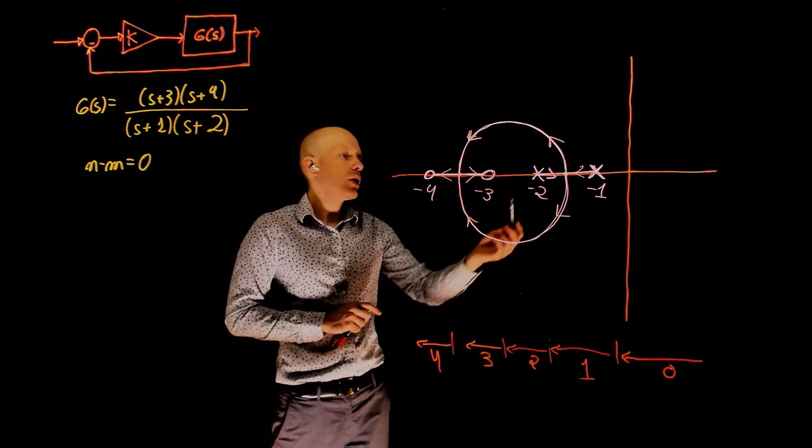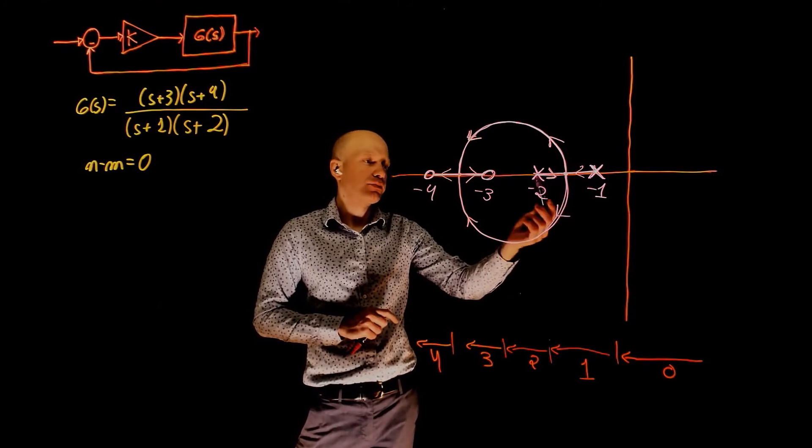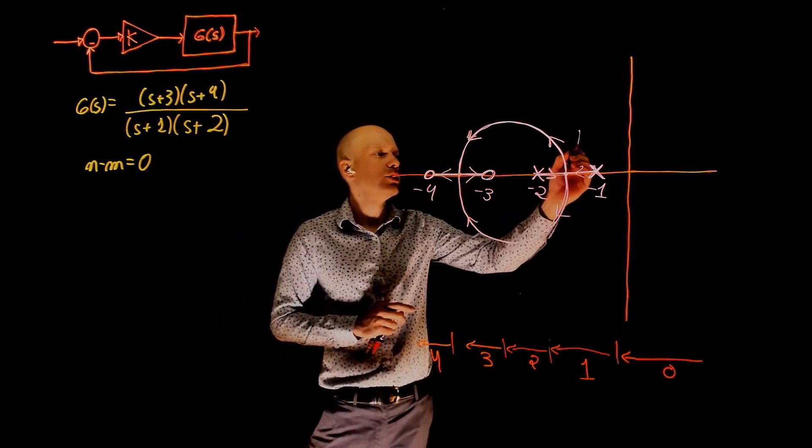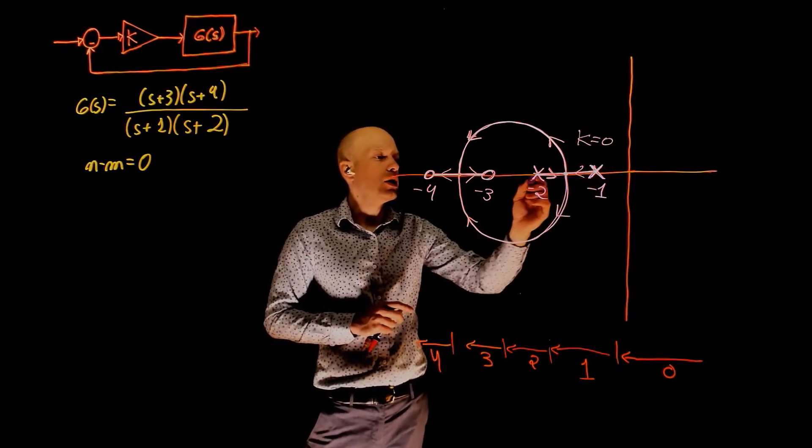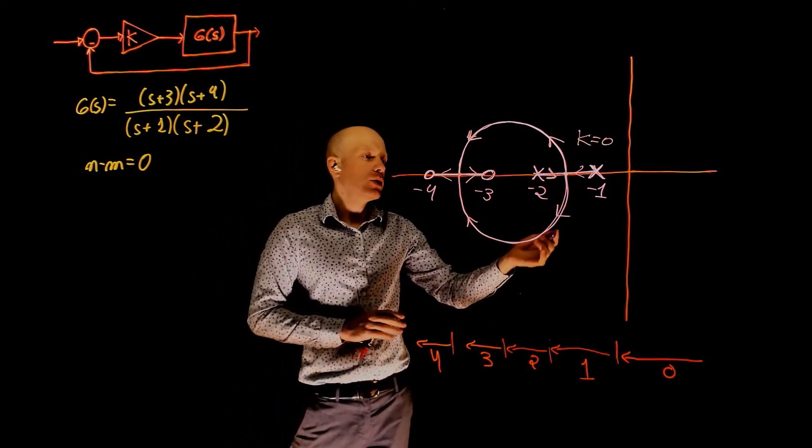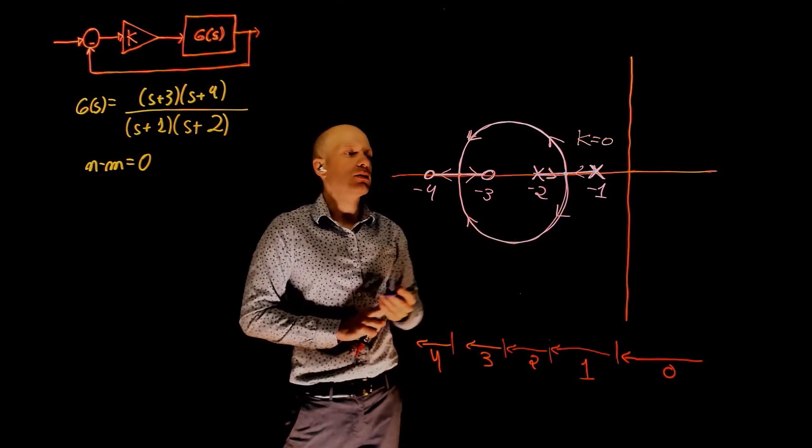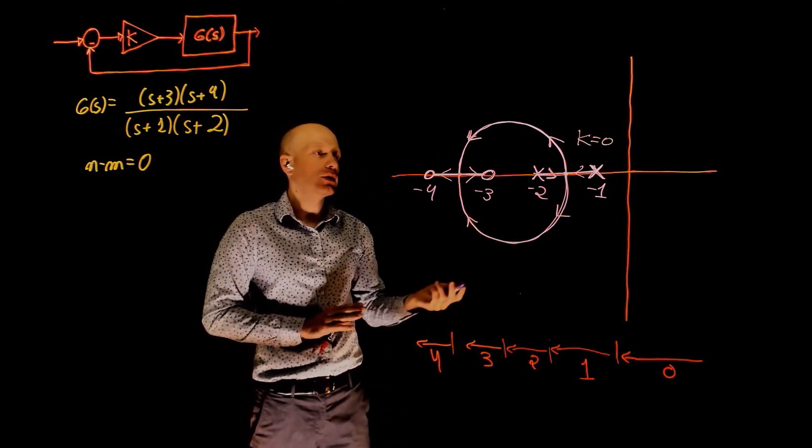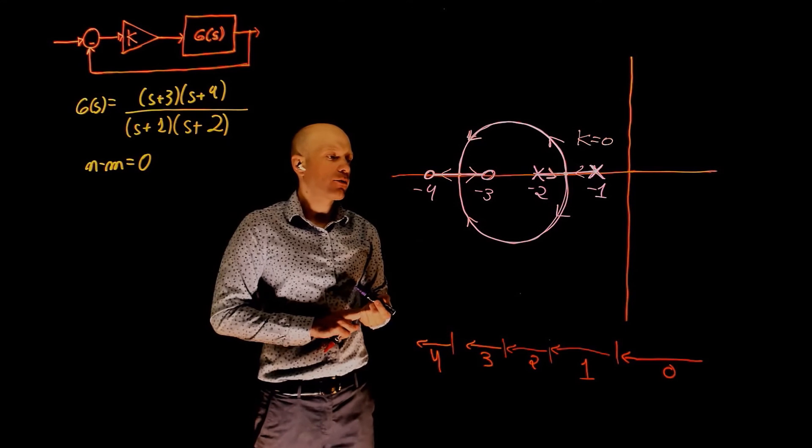The key information here is that these two poles, when k tends to zero, they are real numbers. The system is overdamped. As we keep increasing k, now we make the system critically damped, the poles break away from the real axis.